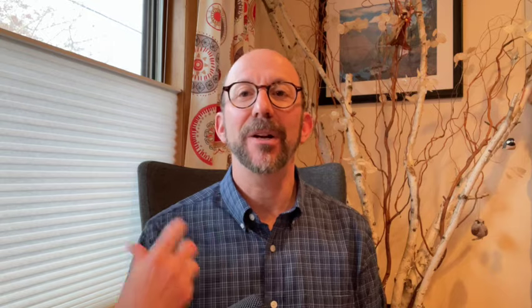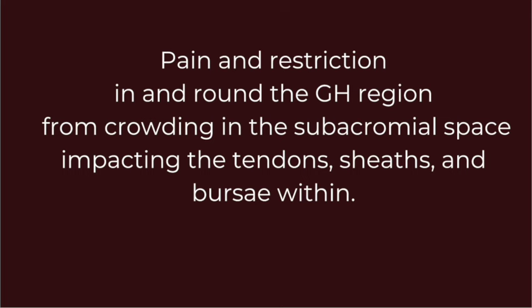What is shoulder impingement? It is pain in and around the shoulder resulting from crowding in the subacromial space. That crowding impacts the important structures in that space, which are tendons, tendon sheaths, and bursa.